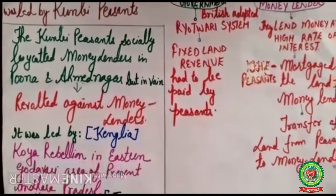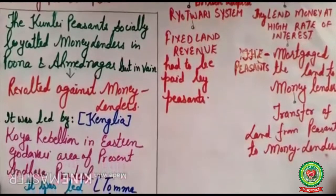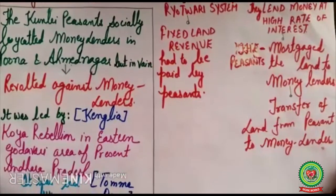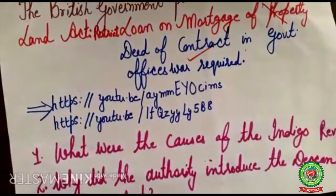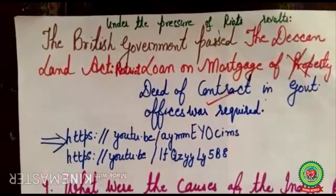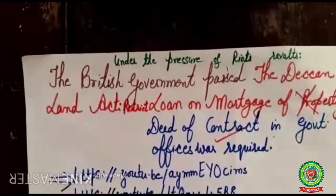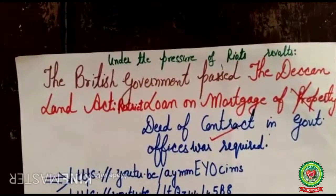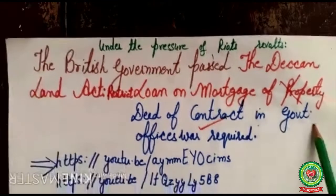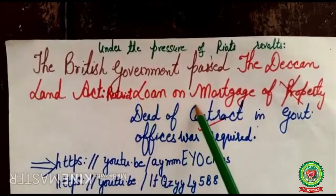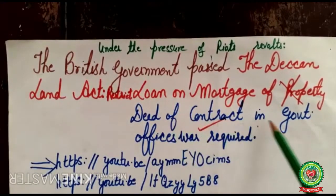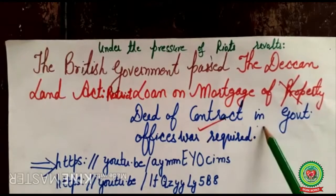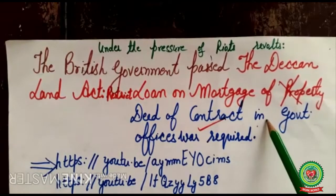A Kowa rebellion also took place in the eastern Godavari area of present-day Andhra Pradesh, led by a leader called Tomat Dora. Under the pressure of the riots and revolts started by the peasants, the British government passed the Deccan Land Act, which restricted loans on mortgage of property and required that deeds of contract be registered in government offices — making it necessary to have a proper record of any transfer between moneylenders and peasants.